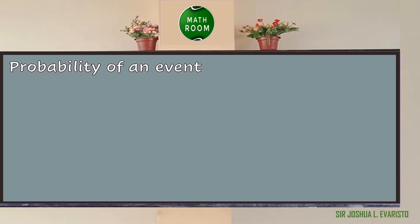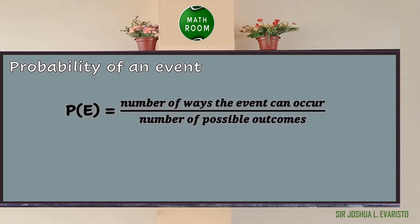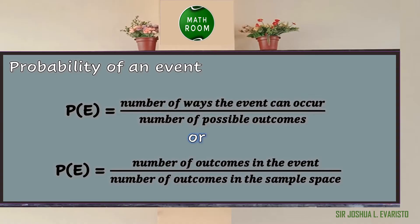Now let us talk about the probability of an event. To determine the probability of an event, we can use the formula: probability of E is equal to the number of ways the event can occur over the number of possible outcomes. Or, probability of an event is equal to the number of outcomes in the event over the number of outcomes in the sample space.